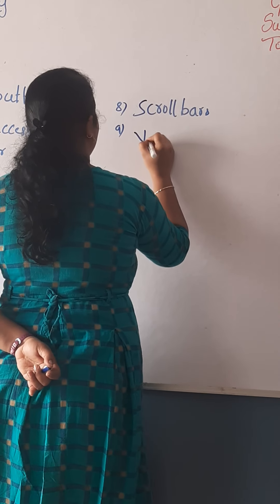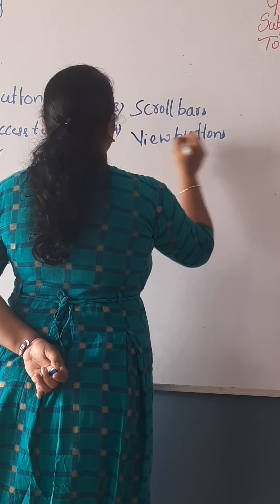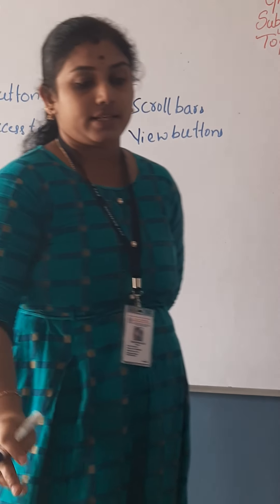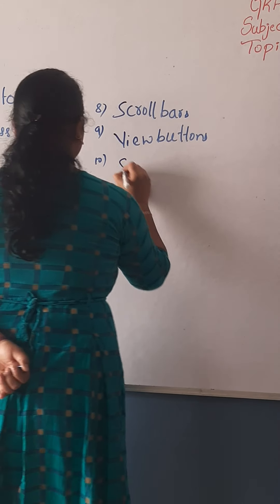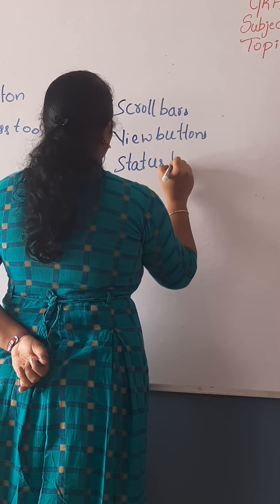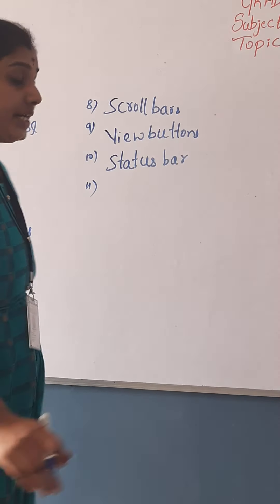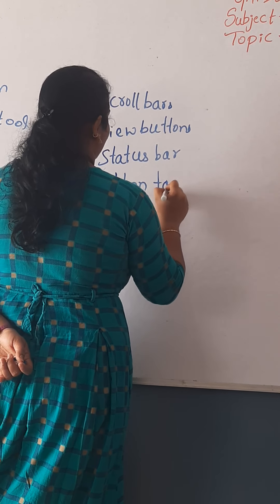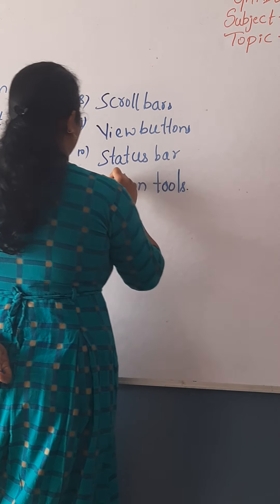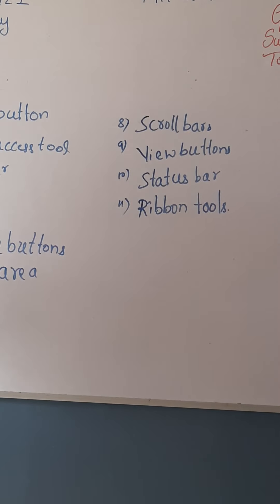Next, we will be having View Buttons. Then we will be having the Status Bar. Then we will have Ribbon Tools. These are some of the components we have been studying in the last class — we are just remembering them.